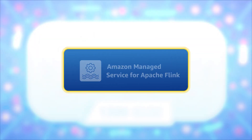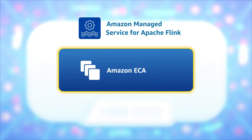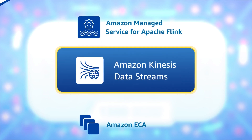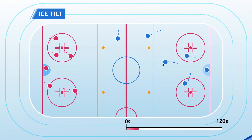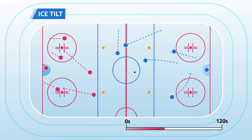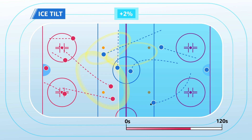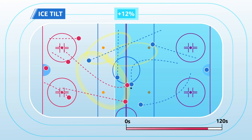Using a number of AWS tools and services to analyze this data, Ice Tilt continually measures the average location of the play over a rolling two-minute segment to help quantify which team owns the ice throughout the game.